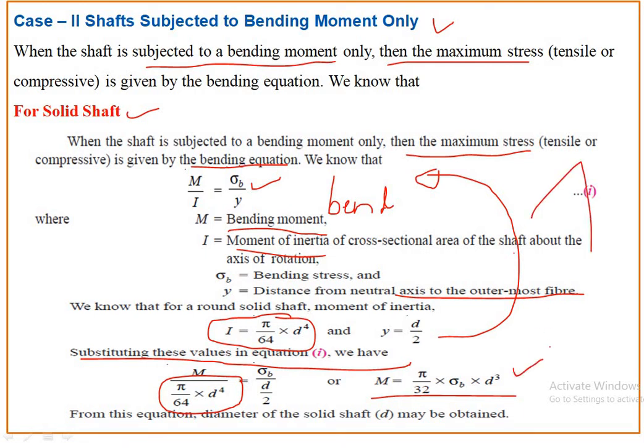From the bending equation, we get M = π/32 × σb × d³ for a solid shaft. From this equation we can find the diameter of a solid shaft when the shaft is subjected to bending moment only. In this case we are taking into consideration only bending stress, not torsional shear stress.